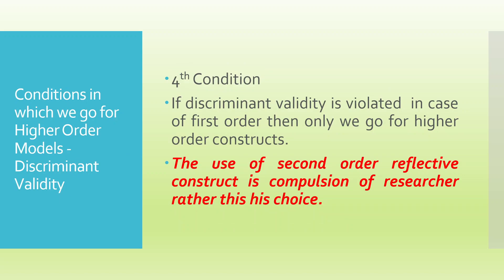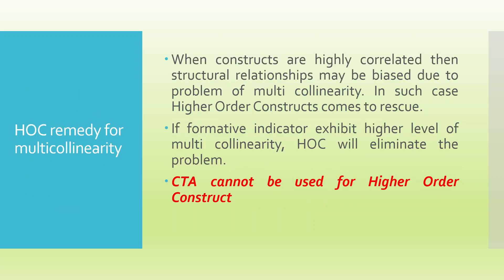Now in which scenario should we go for the higher order? It highly depends on discriminant validity. If discriminant validity is violated in the case of first order, then only we go for higher order constructs. The use of a second order reflective construct is a compulsion of a researcher rather than his choice. We go for a second order model only when we are not able to achieve discriminant validity in the first order. Higher order constructs are also a remedy for multicollinearity — when constructs are highly correlated, the structural relationship may be biased, and in such cases the higher order construct comes to the rescue.